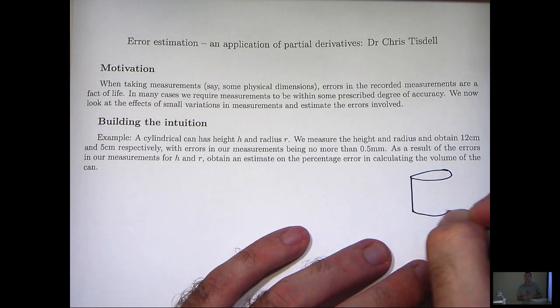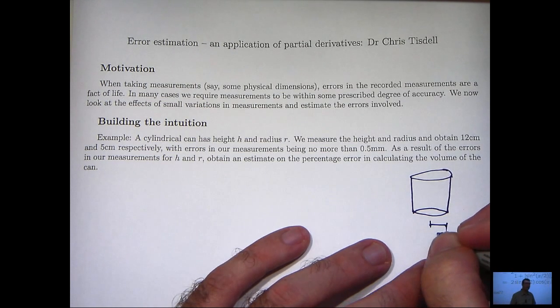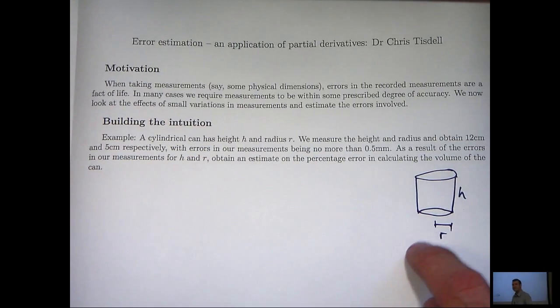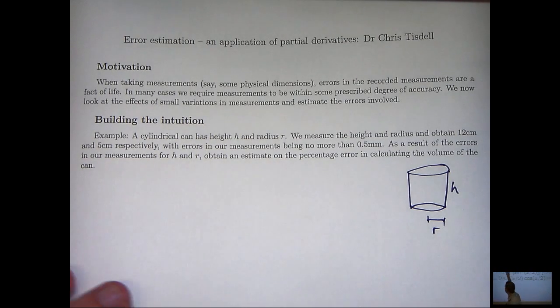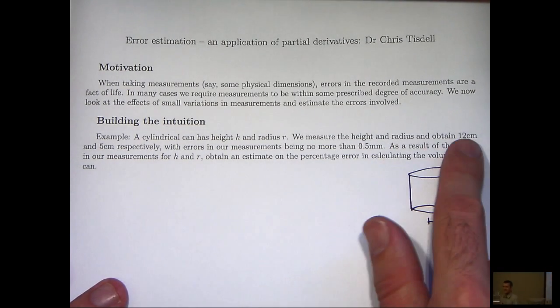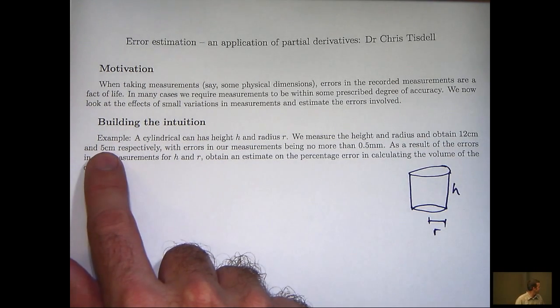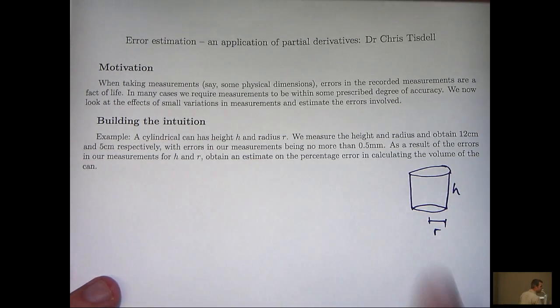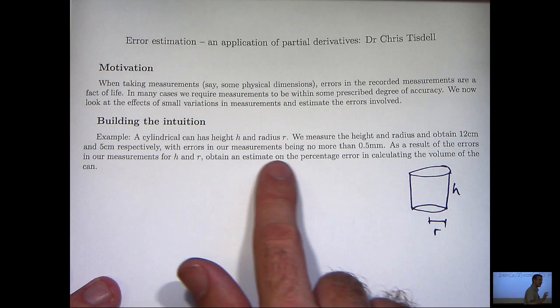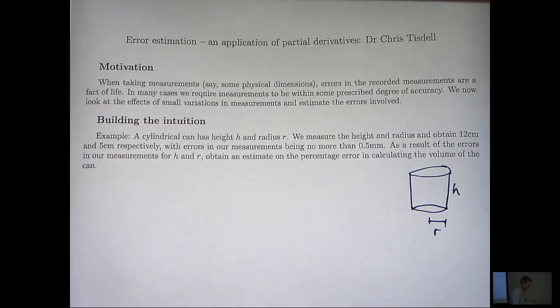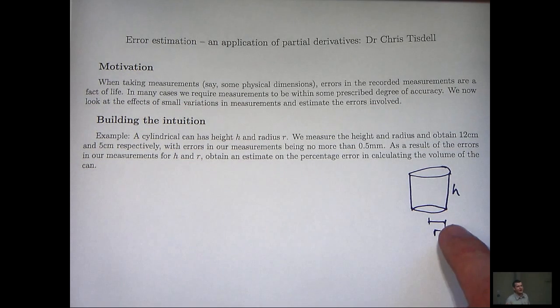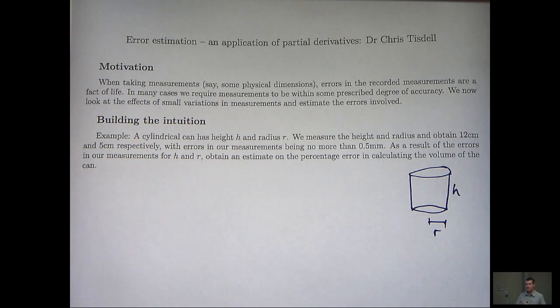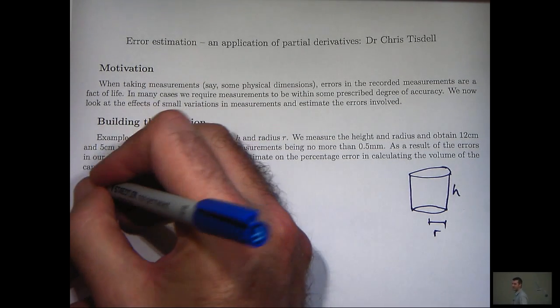Let me put this into a particular example. Suppose that we are wanting to calculate the volume of a cylindrical can. To do that we would have to measure the radius and the height. In this particular example, our measurements for the height is 12cm and the measurement for the radius is 5cm. With errors in our measurements being no more than half a millimeter. As a result of the errors in our measurements, obtain an estimate on the percentage error in calculating the volume of the can.